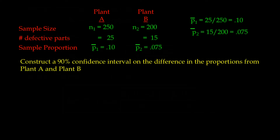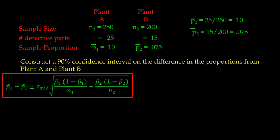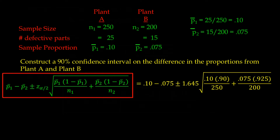Now let's construct a 90% confidence interval on the difference in proportions from plant A and plant B. Plugging in the numbers, we get 0.10 minus 0.075 as the point estimate, then plus and minus 1.645 times the square root of 0.10 times 0.9 divided by 250, plus 0.075 times 0.925 divided by 200.